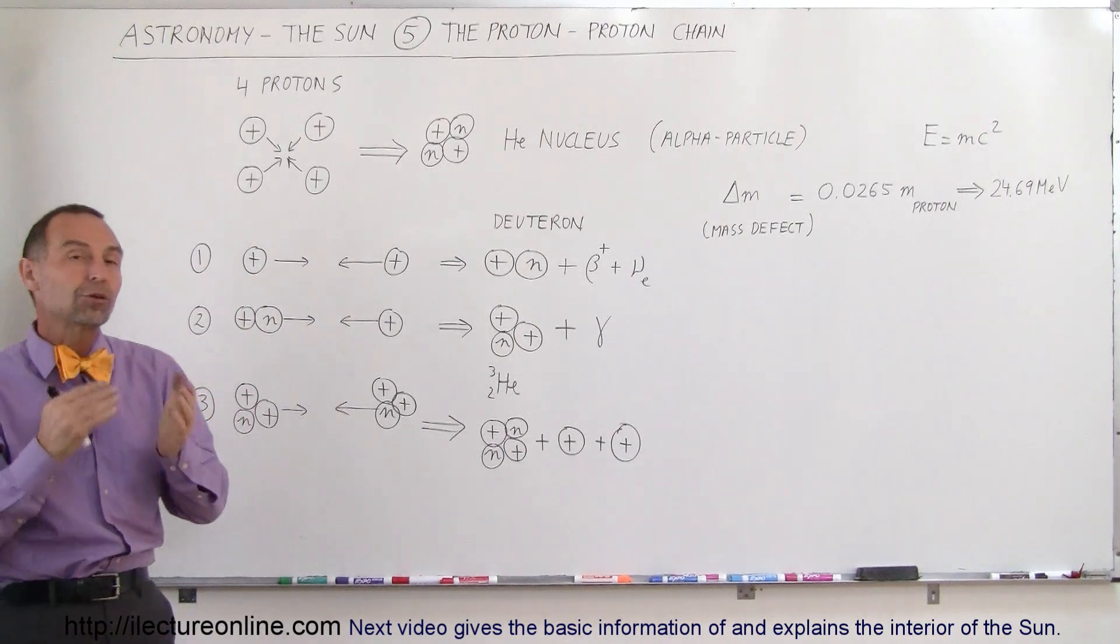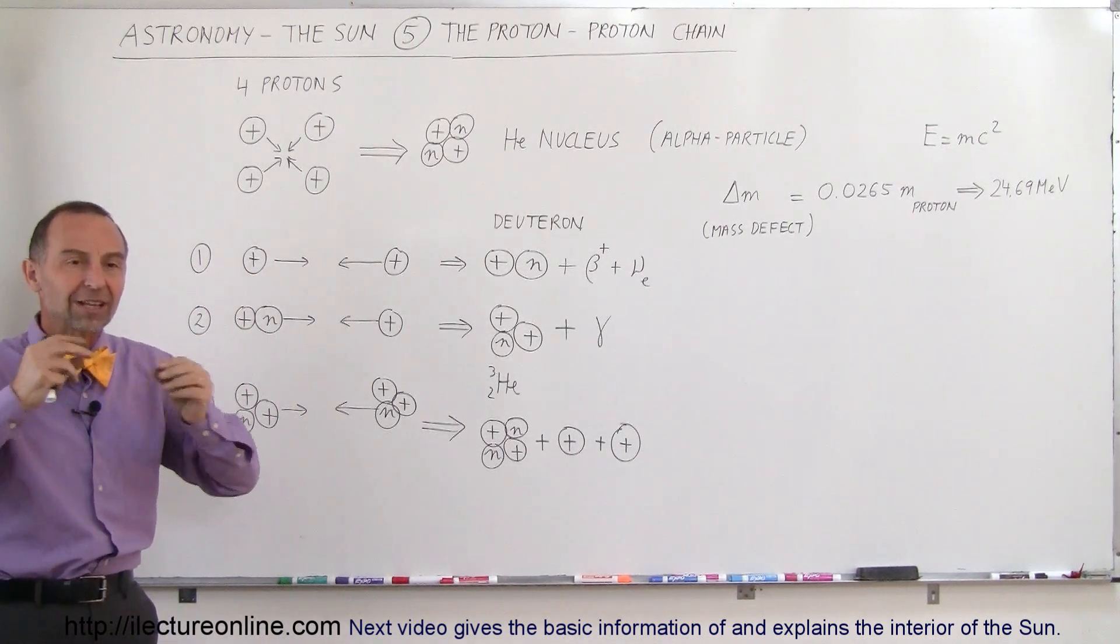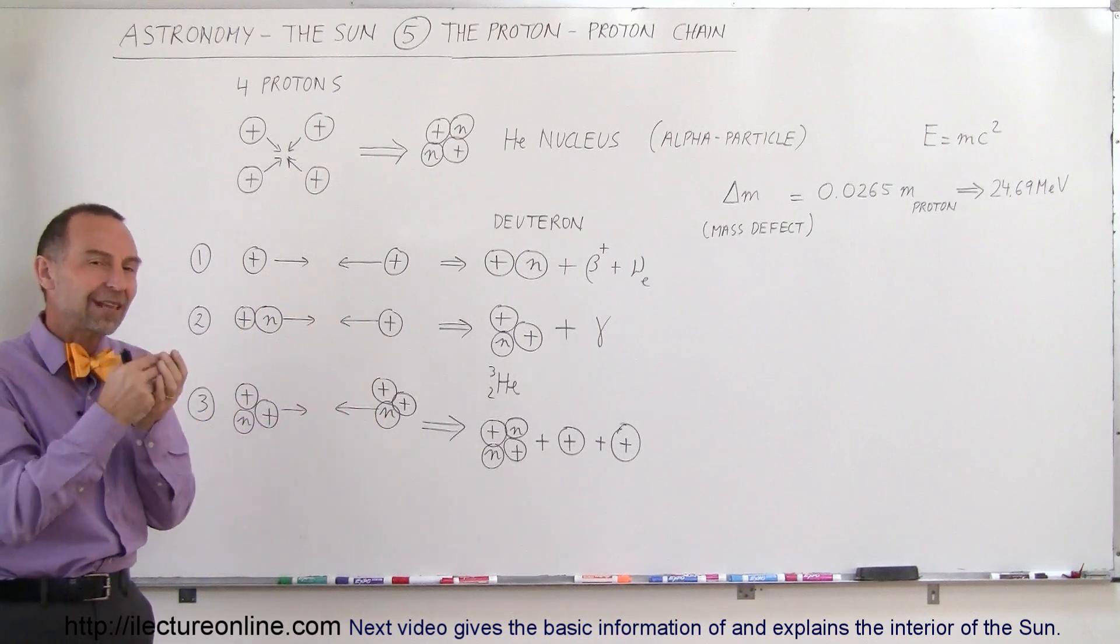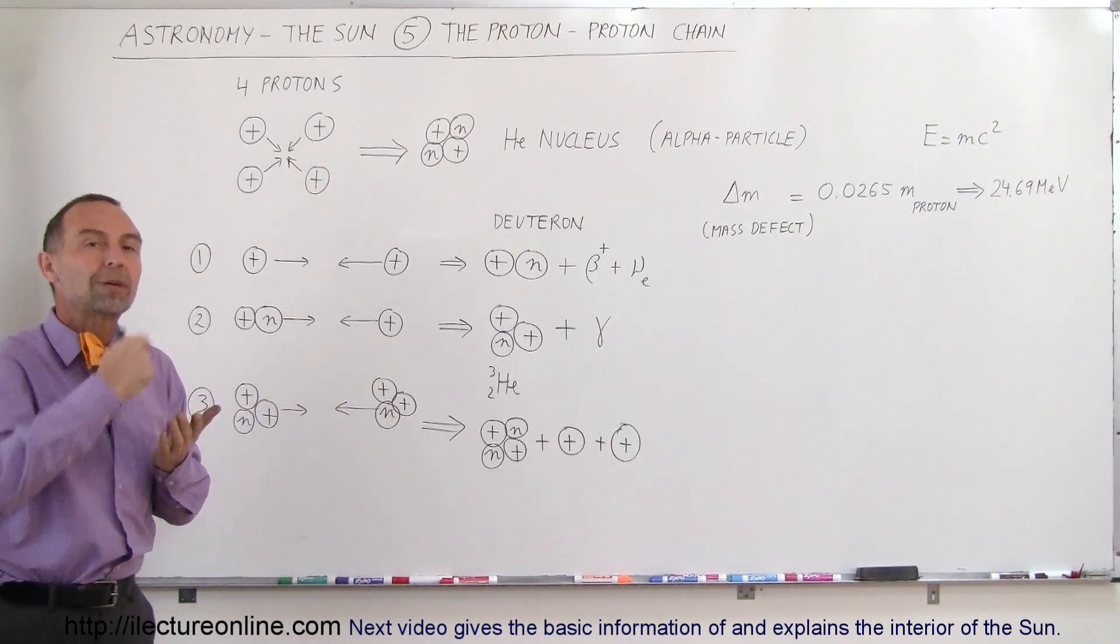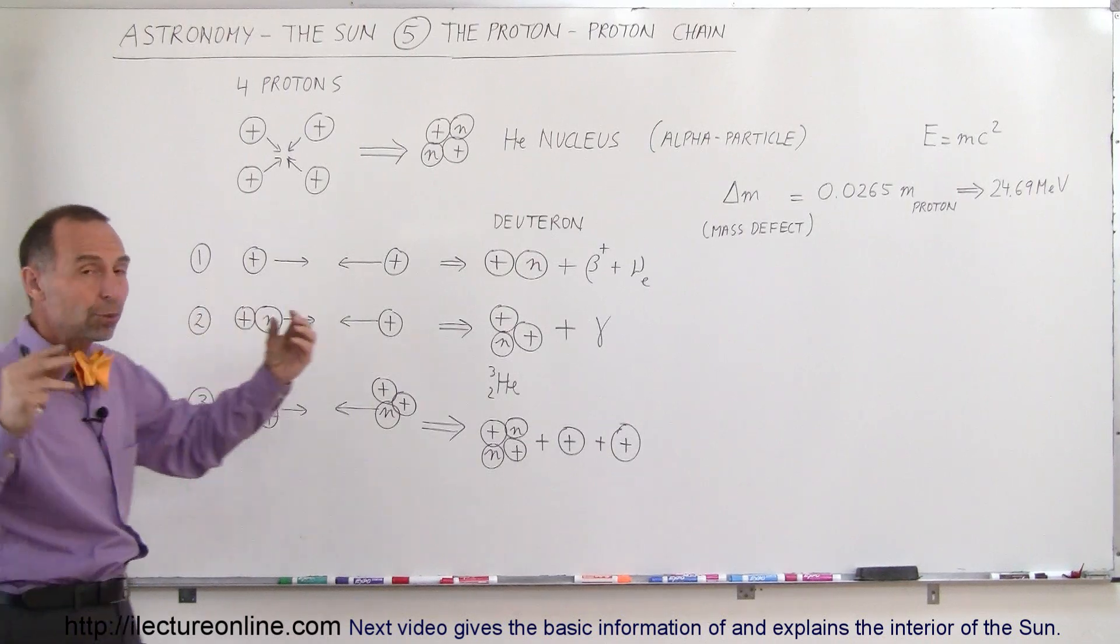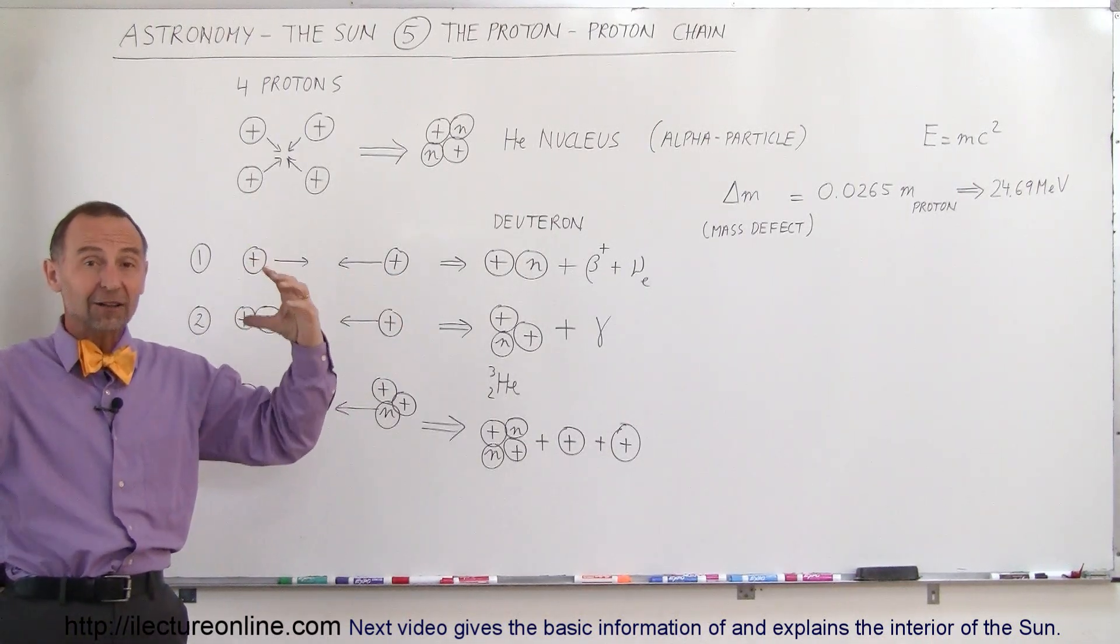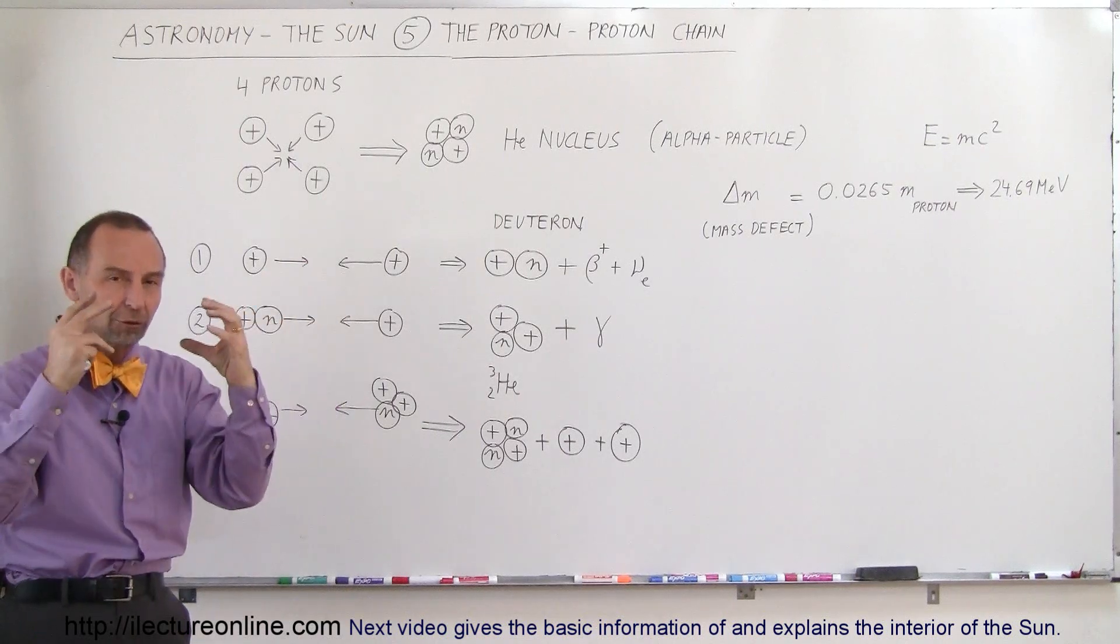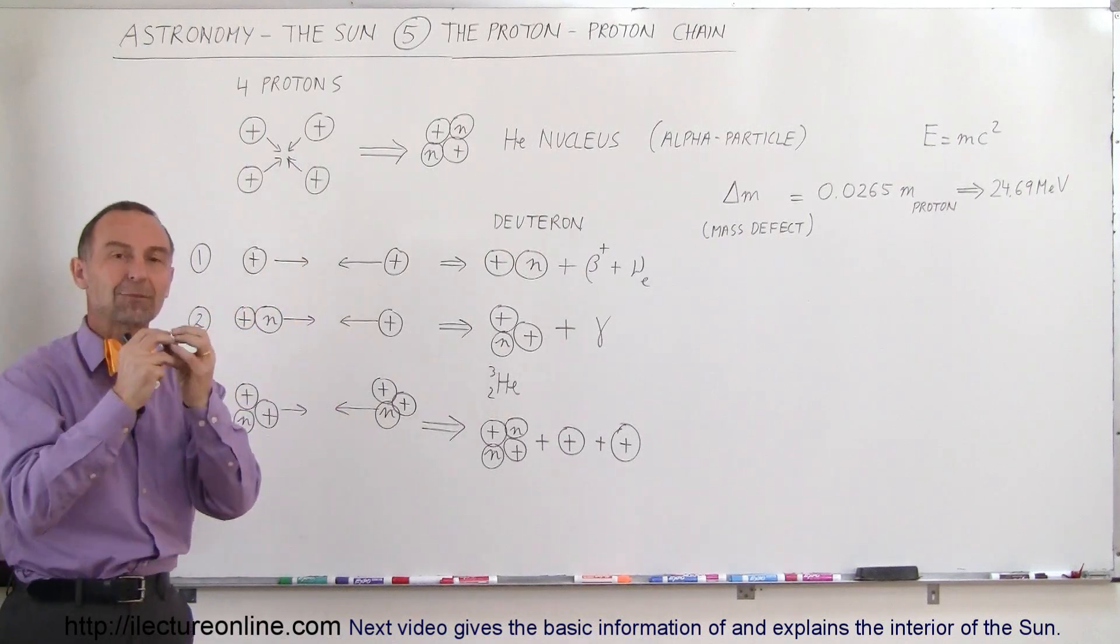The reason why they call the process the proton-proton chain is because it is a series of protons that get slammed together and ultimately form helium. The three steps are as follows. The first step is that two protons come together at very high velocities, high enough velocities to overcome the repulsive forces of the protons and slam together.